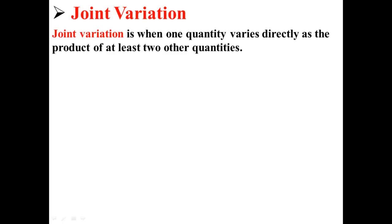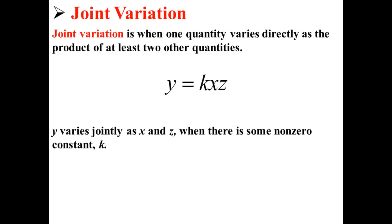Joint variation is when one quantity varies directly as a product of at least two other quantities. For example, here we have the equation y equals kxz. y varies jointly as x and z when there is some nonzero constant, k.